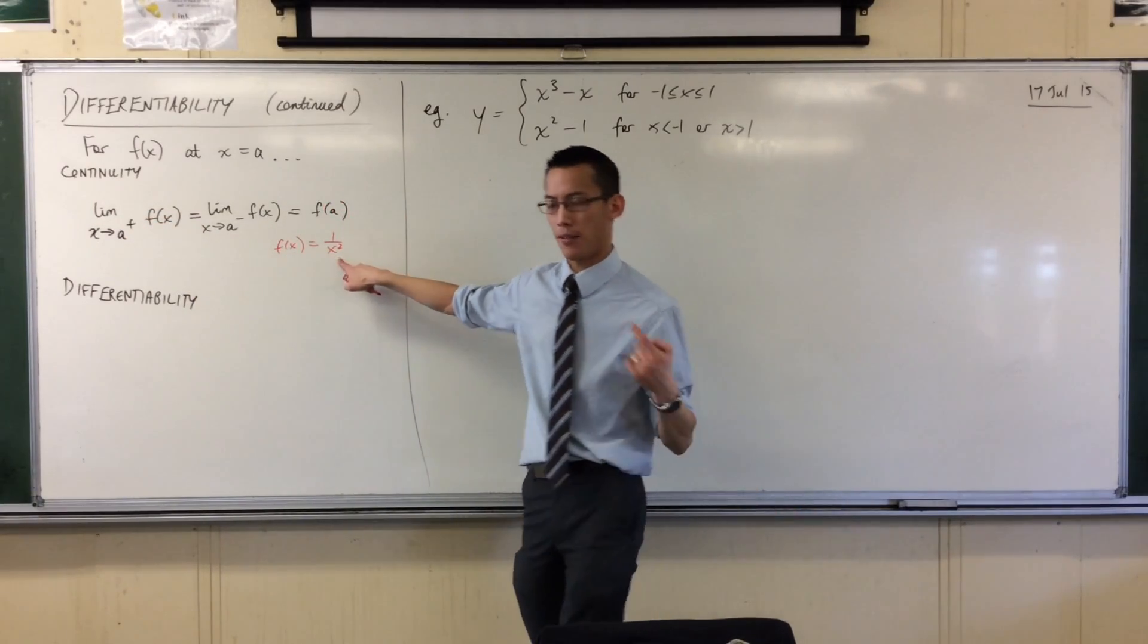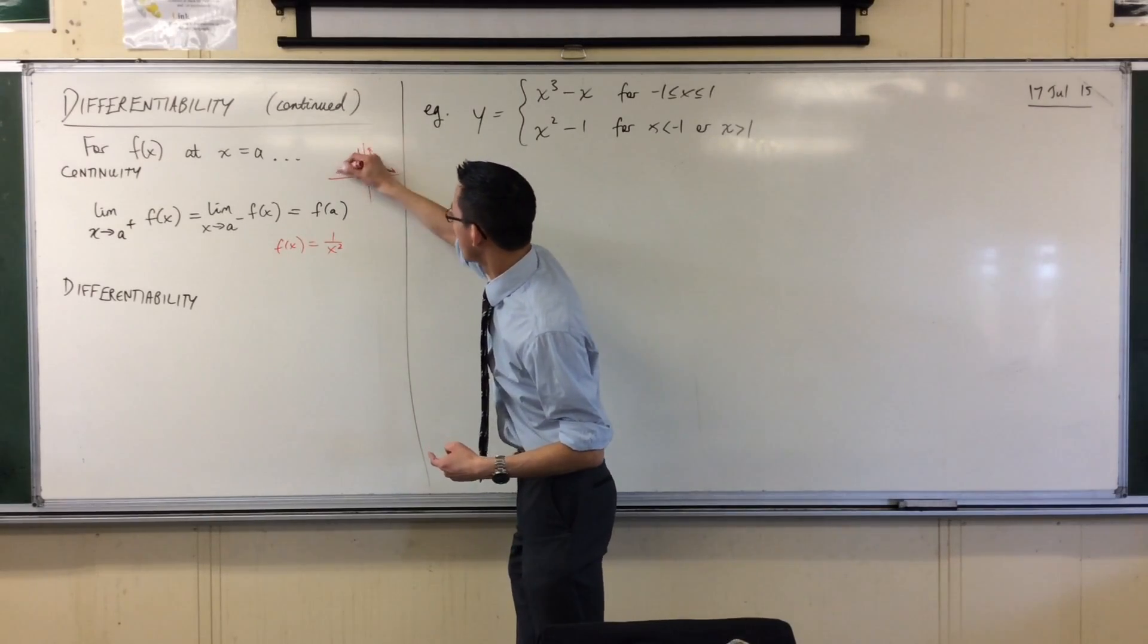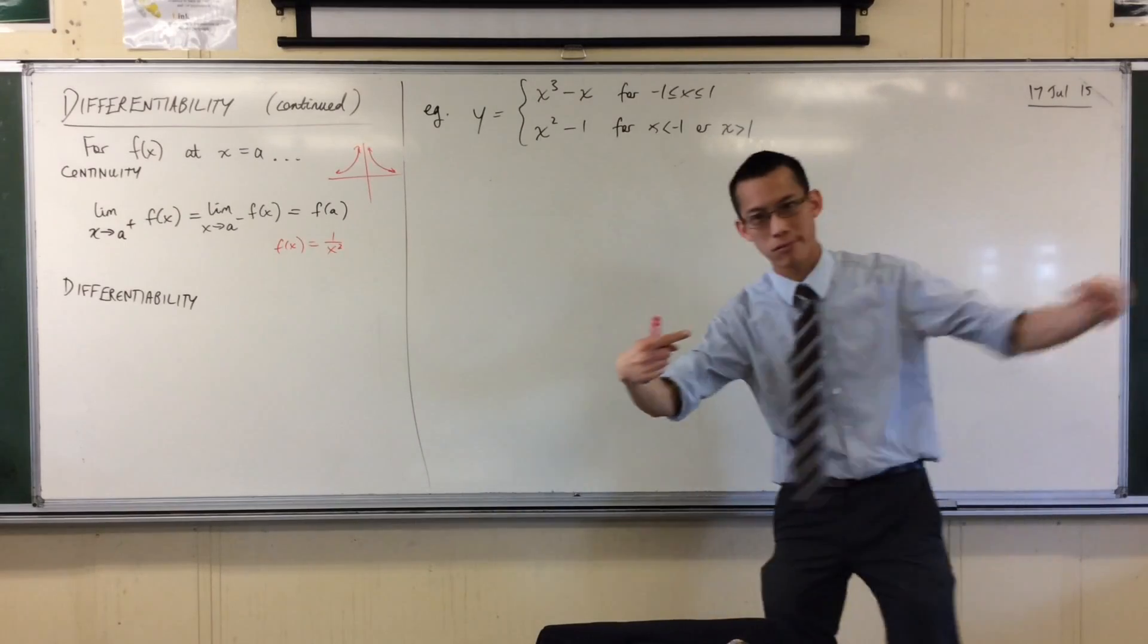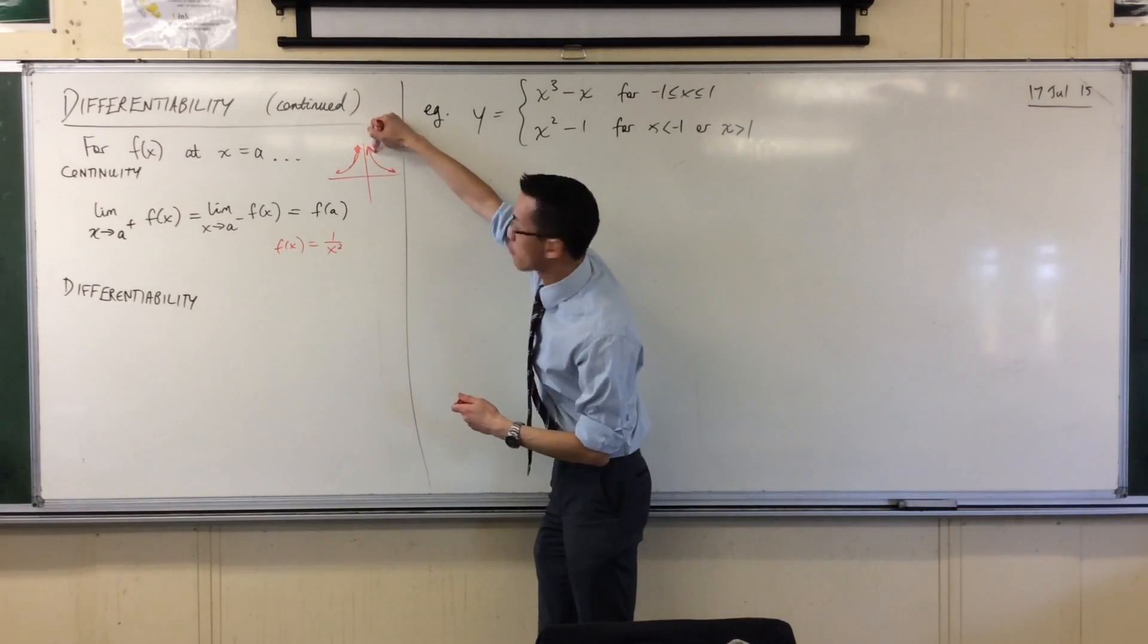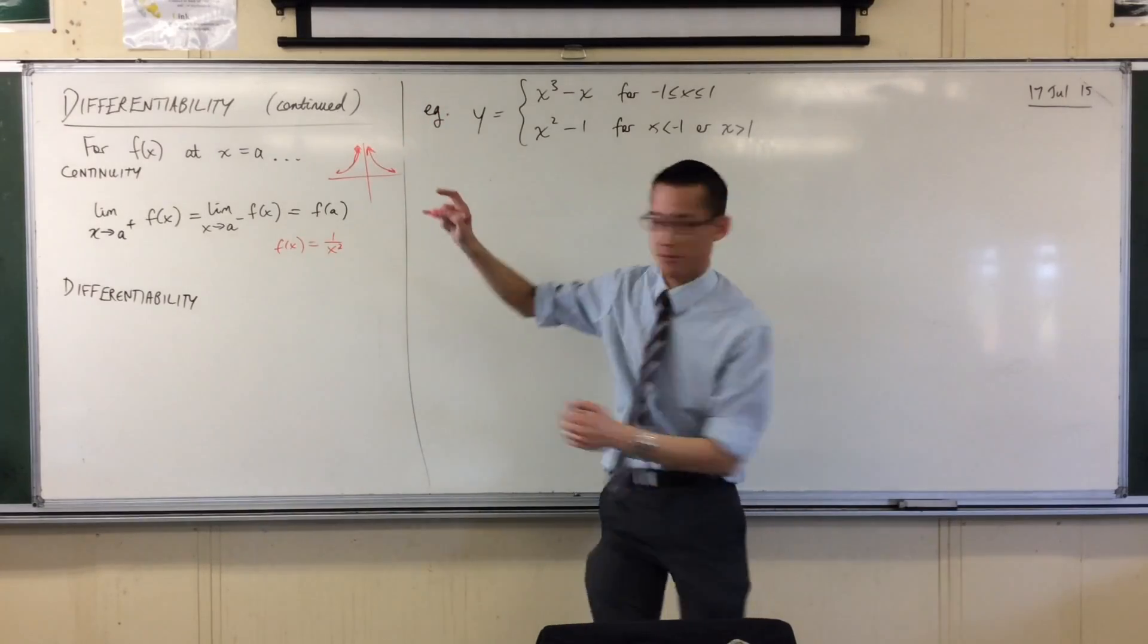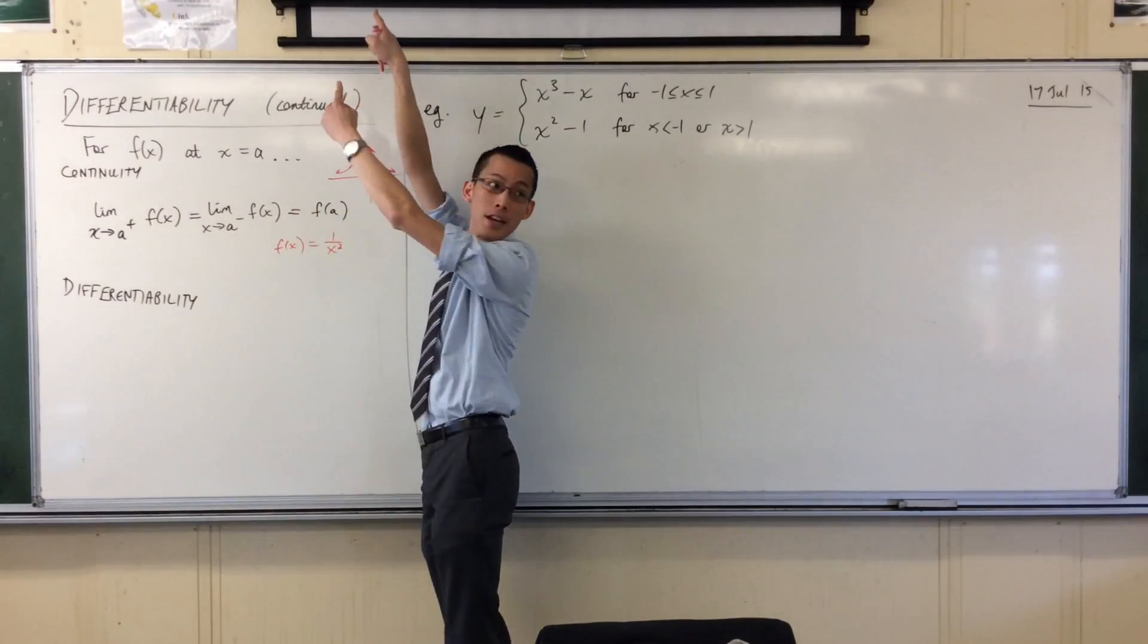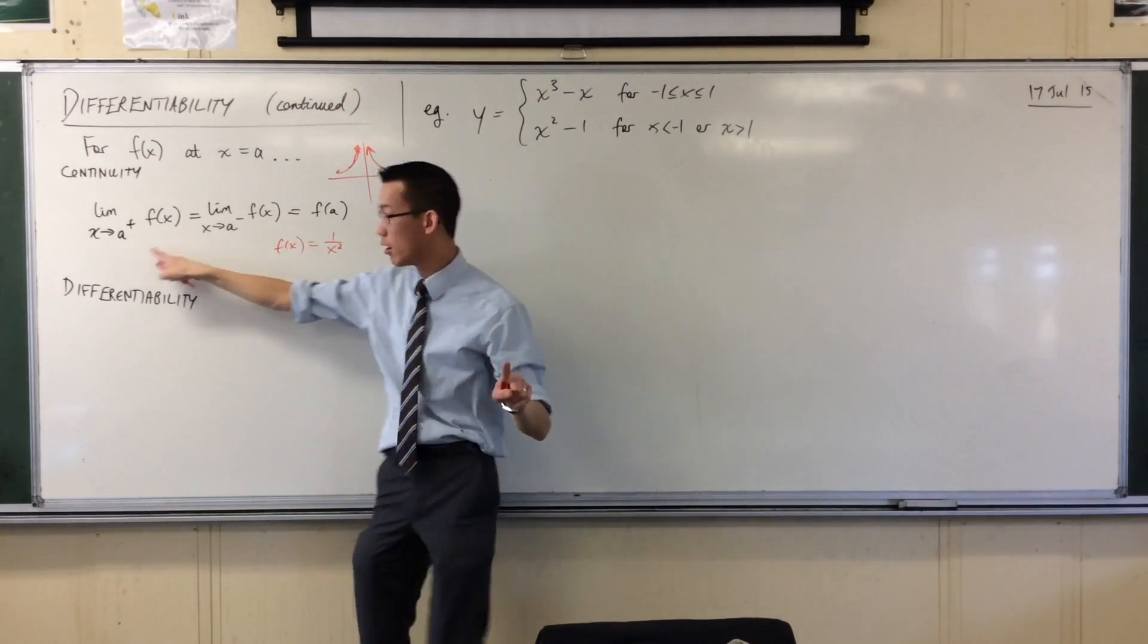But if you recall what this looks like is something like this. Now as you approach zero from the left and from the right, you're going up here. What are you approaching? What values are you approaching? You're going up to positive infinity, right? So these two are equal for this case, but because they're not equal to this, because this doesn't exist at zero, it's not continuous.